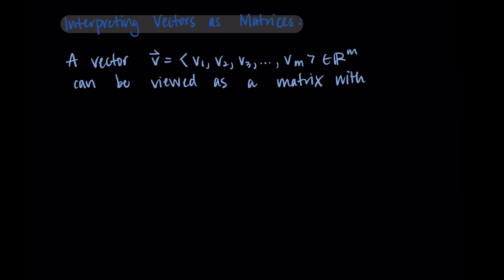This vector can be viewed as a matrix with dimensions m by 1. So we can write V as a matrix with just a single column. So it's V1, V2, V3, all the way through Vm. And this matrix has dimensions m, since it has m rows, by 1, since it has one column.